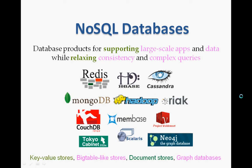Although currently there is no standard definition for NoSQL database, it is commonly interpreted as 'not only SQL.' NoSQL databases are products for supporting large-scale applications and data while relaxing consistency and complex queries. NoSQL can be classified into four major categories: Key-Value Store, BigTable/Column Store, Document Store, and Graph Databases.